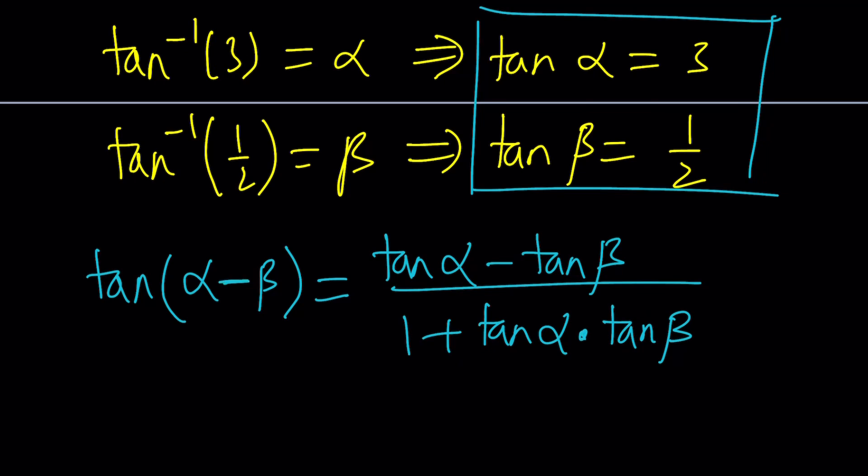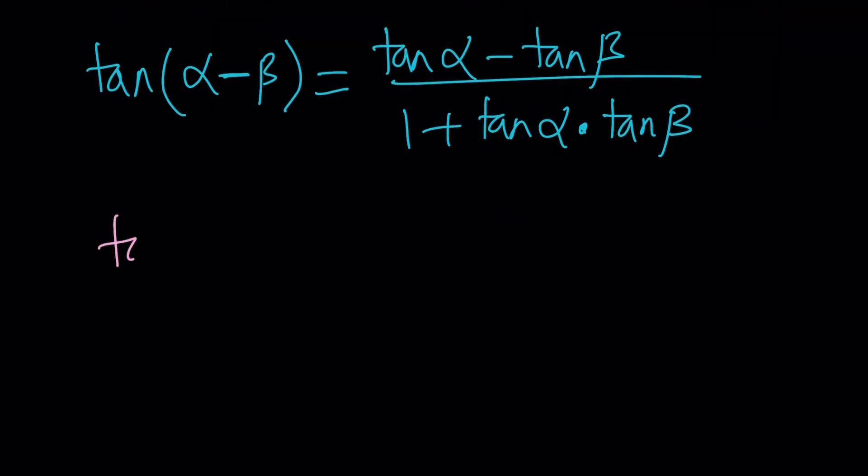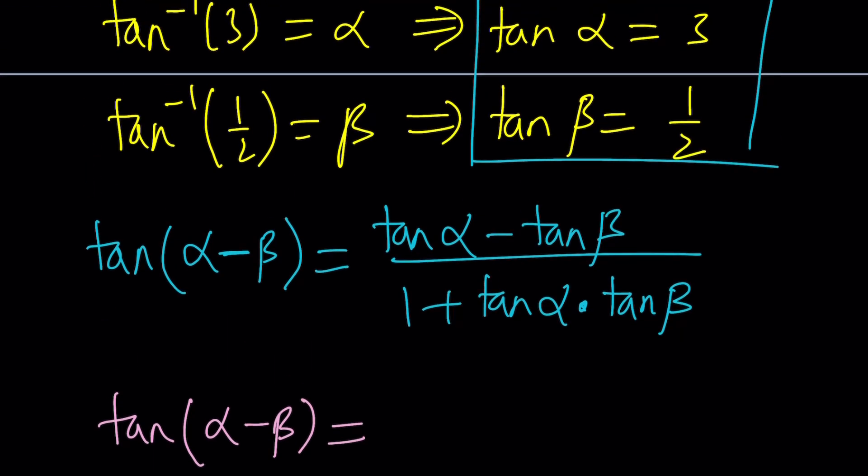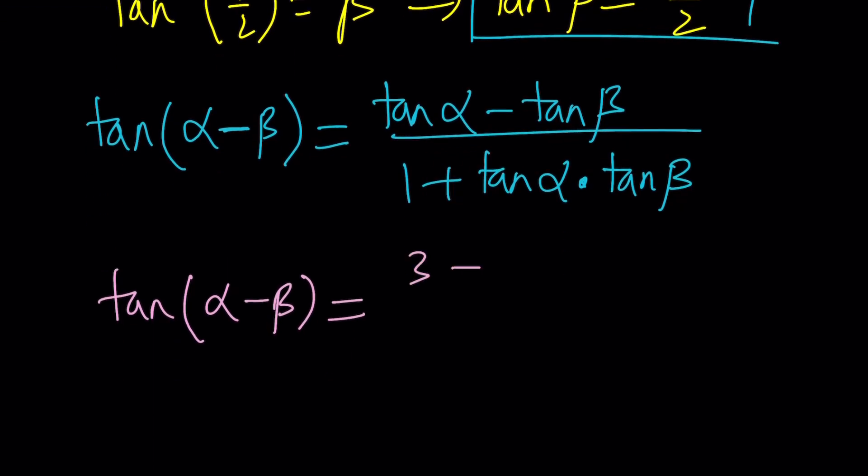This is the difference formula, and the sum formula is very similar. Now let's go ahead and plug in all the values. From here we get tangent, at least at this point we don't know what it is. But we do know tangent alpha is equal to 3, and then tangent beta is 1 half from the given equations. And plus, 1 plus, we're going to get 3 times 1 half, which is 3 halves.